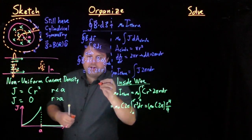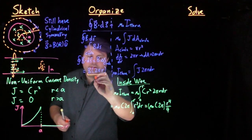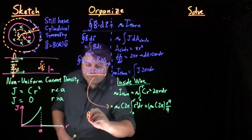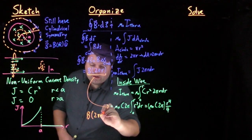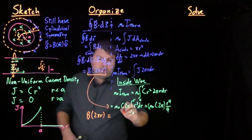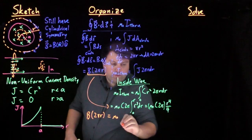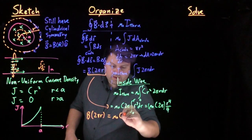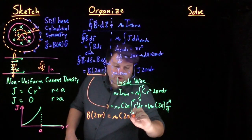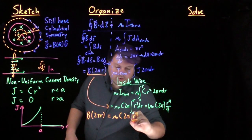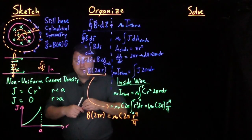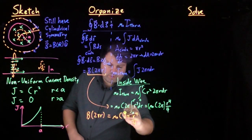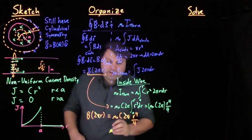So we can do a little bit of canceling, our 2 pi and 2 pi cancel, and r will cancel.